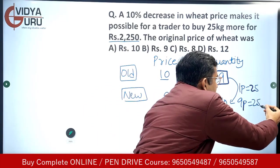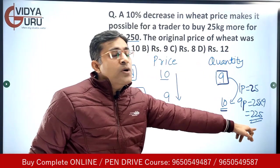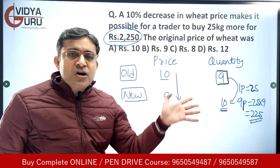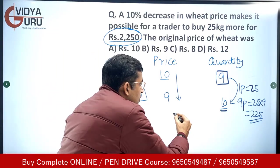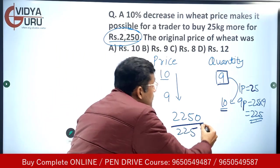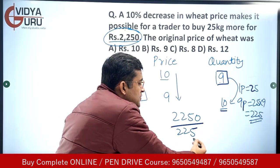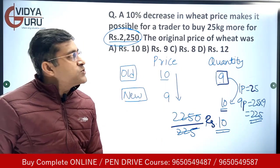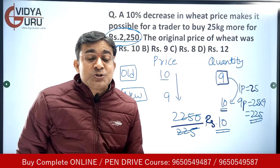You were buying 9 parts earlier. 1 part equals 25, so 9 parts equals 25 into 9, that means 225. Earlier you were buying 225 kg, and the money invested was rupees 2250. So the per kg price is 2250 divided by 225, which means the original price was rupees 10.